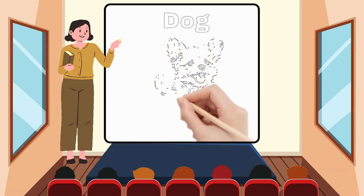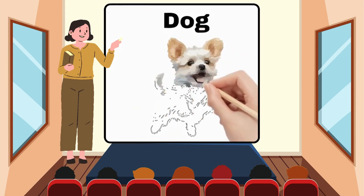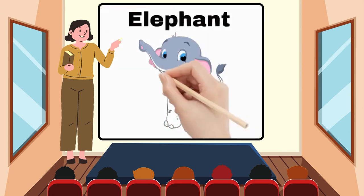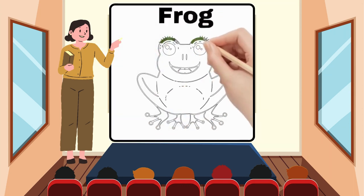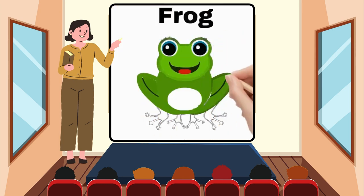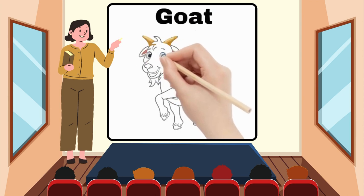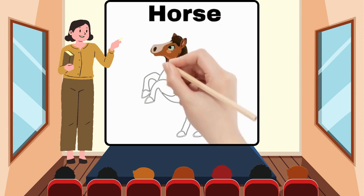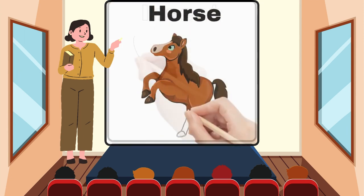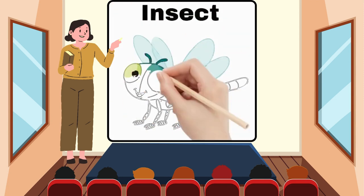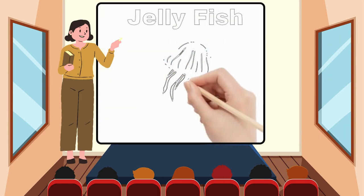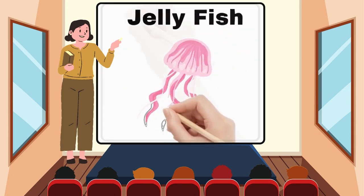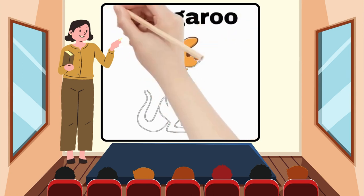D for Dog. E for Elephant. F for Frog. G for Goat.